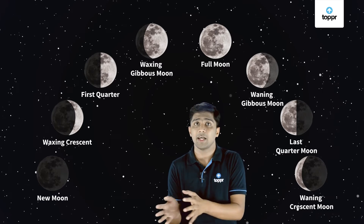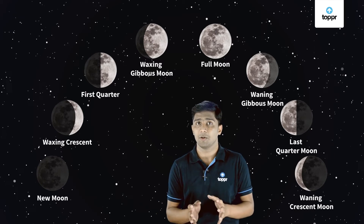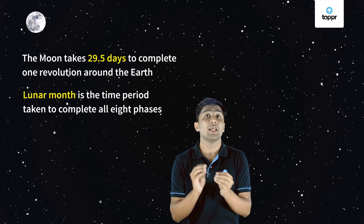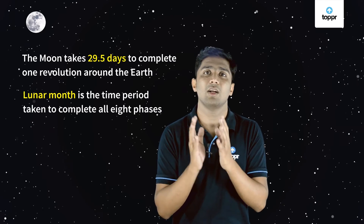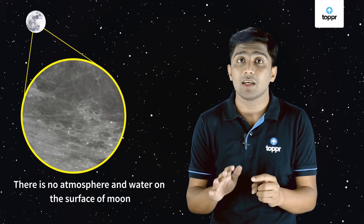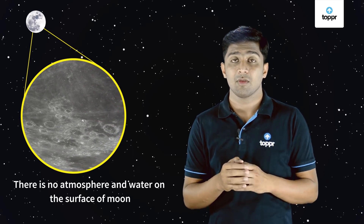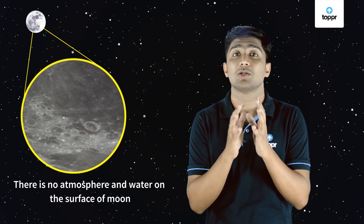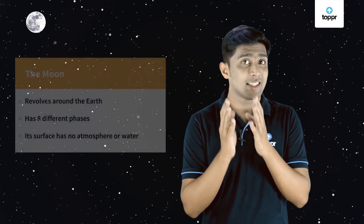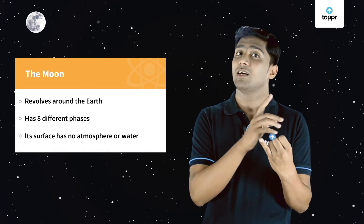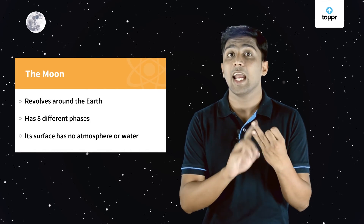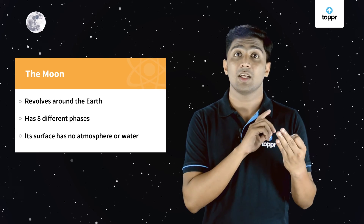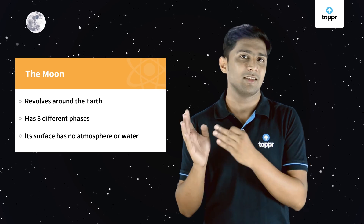Now we know the different phases of moon — there are eight phases of moon. But how much time does the moon take to revolve around the earth? It takes 29 and a half days to complete one revolution, and this is called a lunar month. Speaking about the moon, there is no atmosphere and there is no water on the surface of the moon, and the surface of the moon looks very rough. In this chapter, we have learnt: the moon revolves around the earth, there are eight different phases of the moon, and there is no atmosphere and no water on the moon.